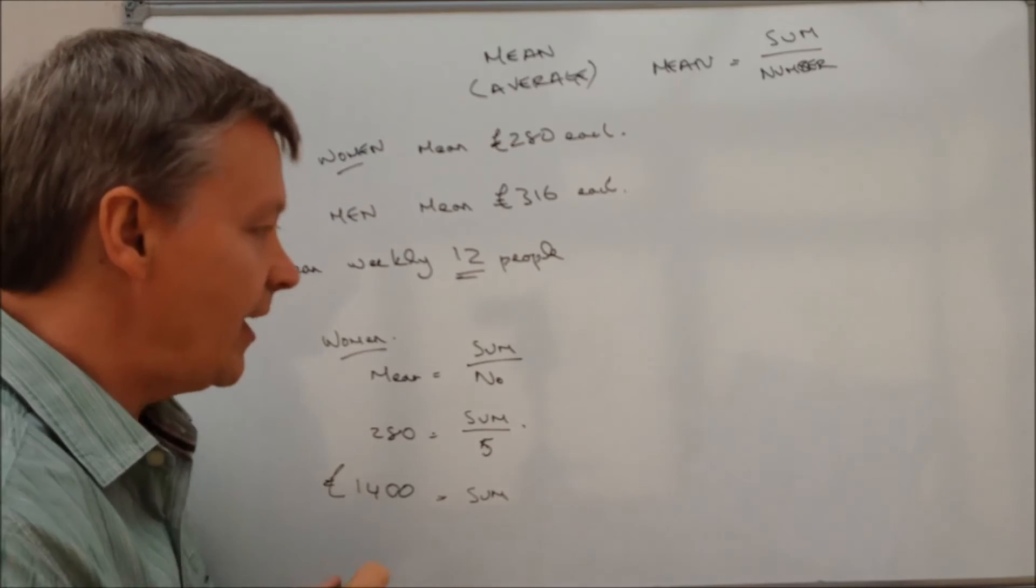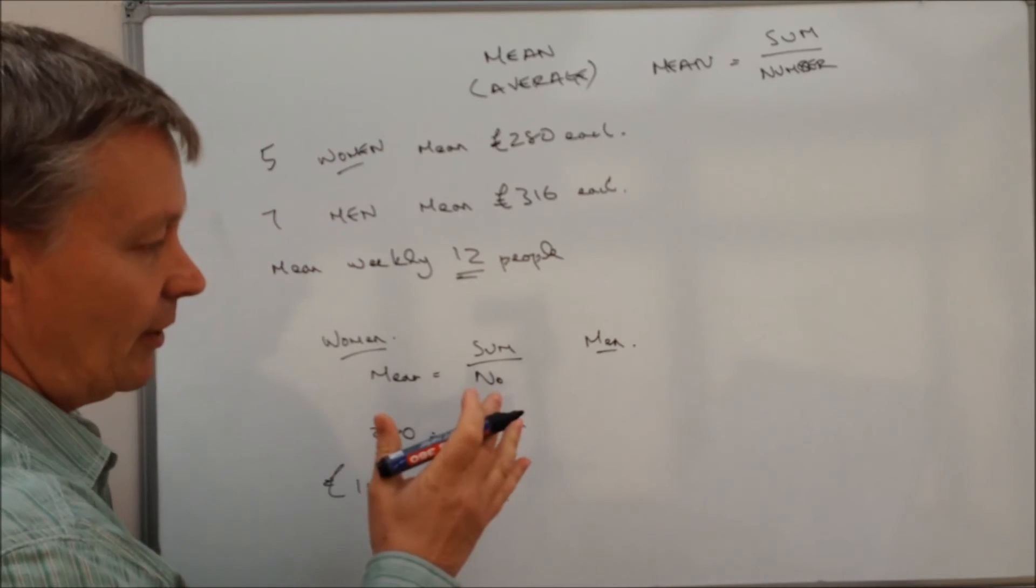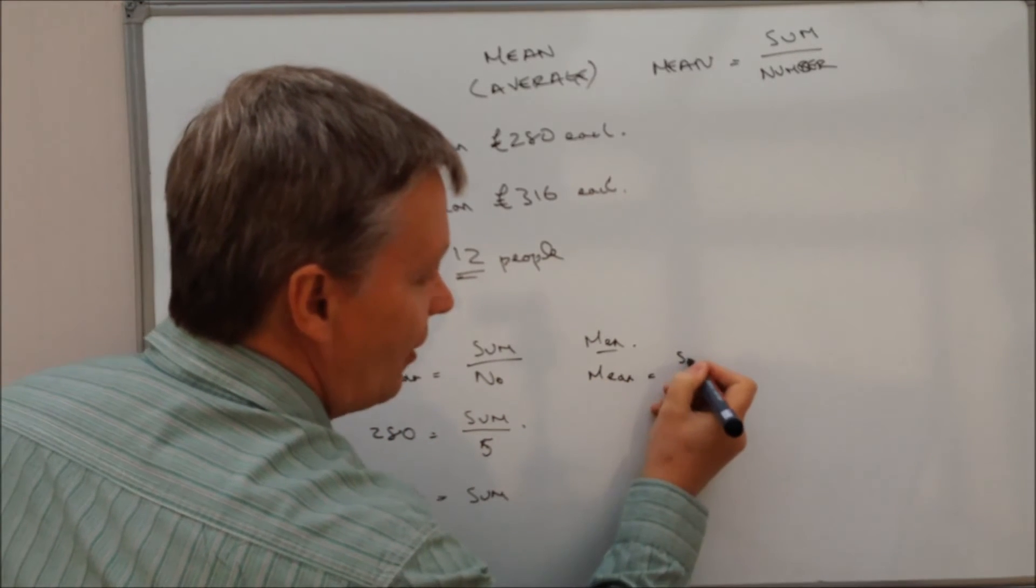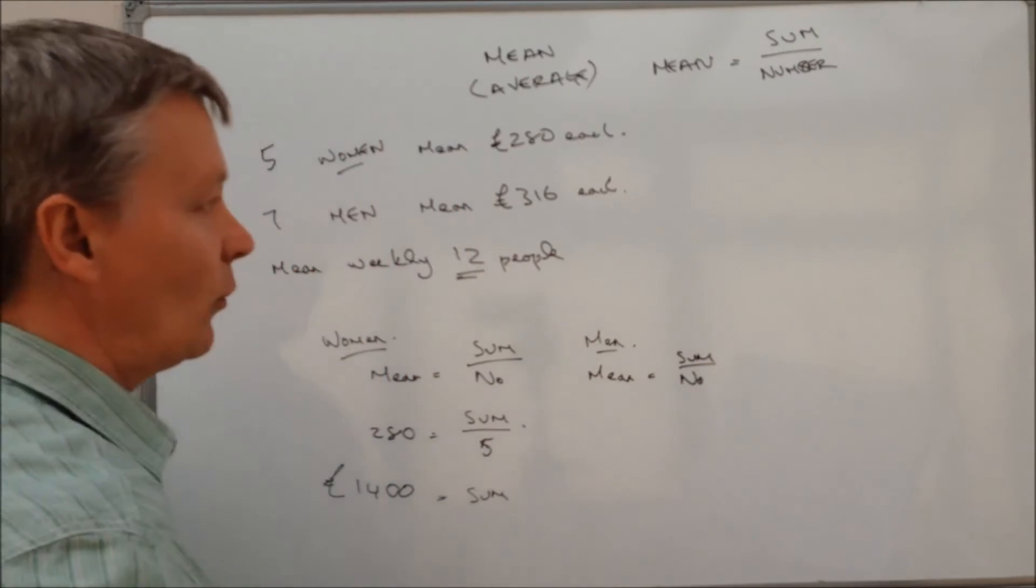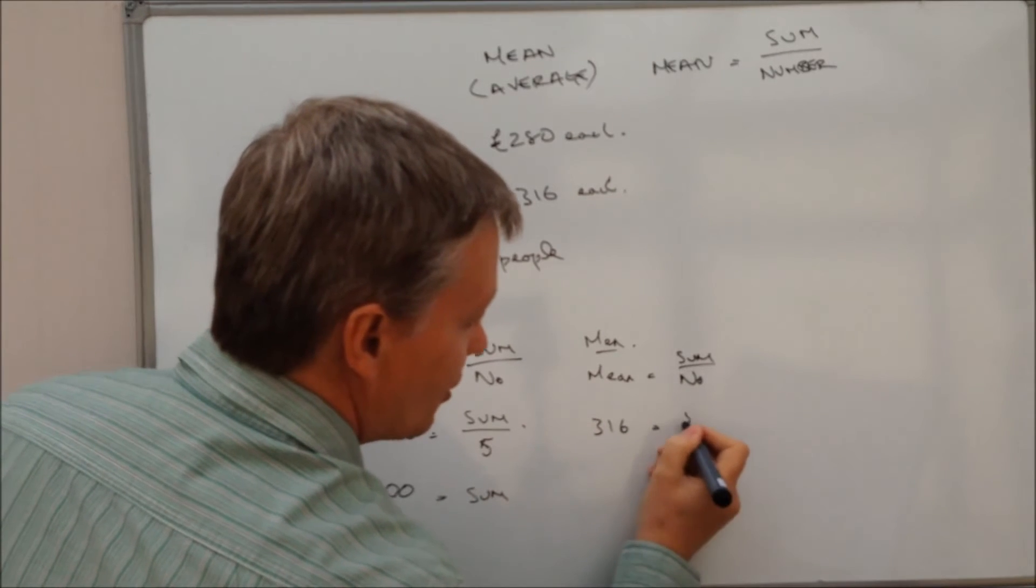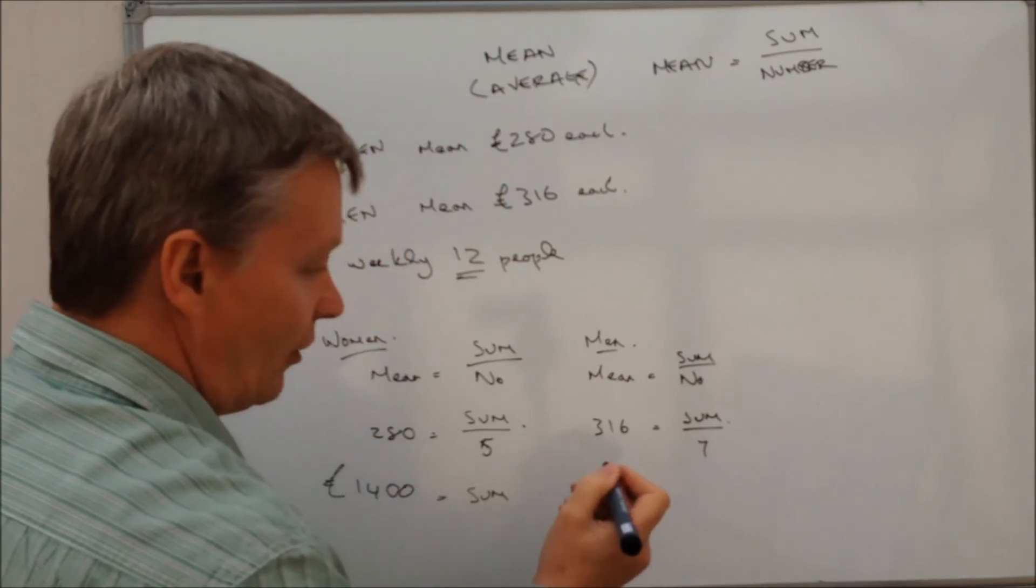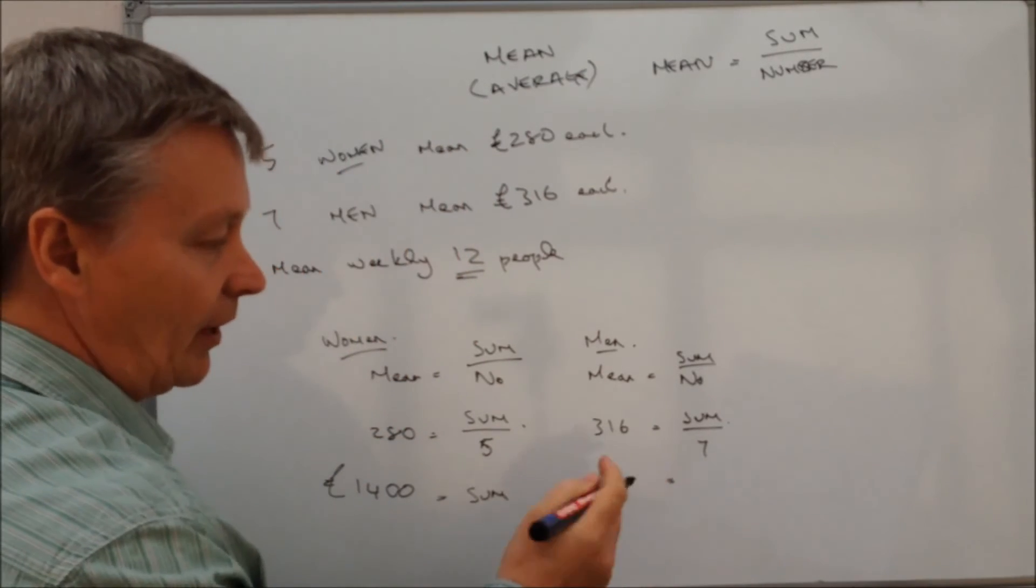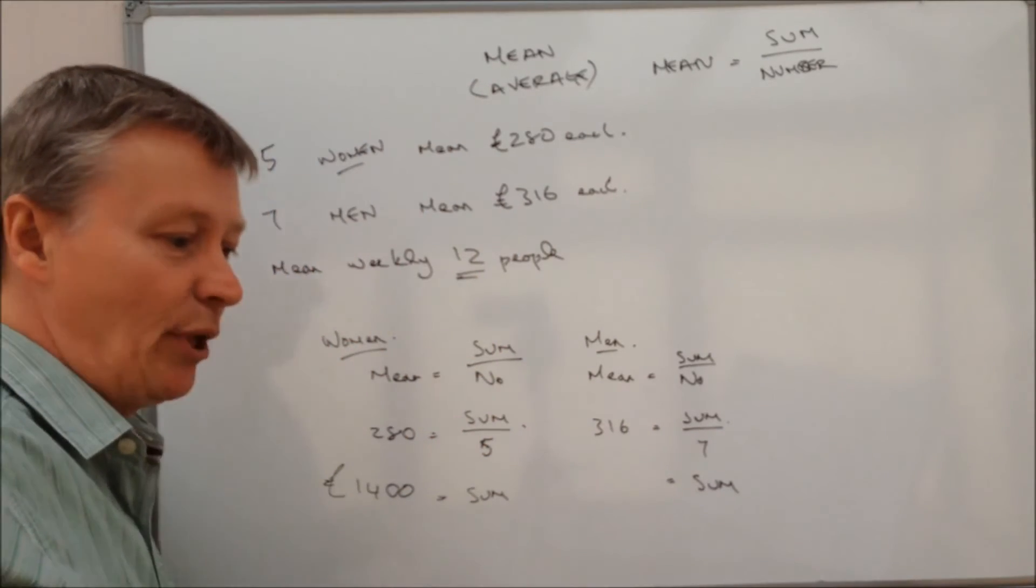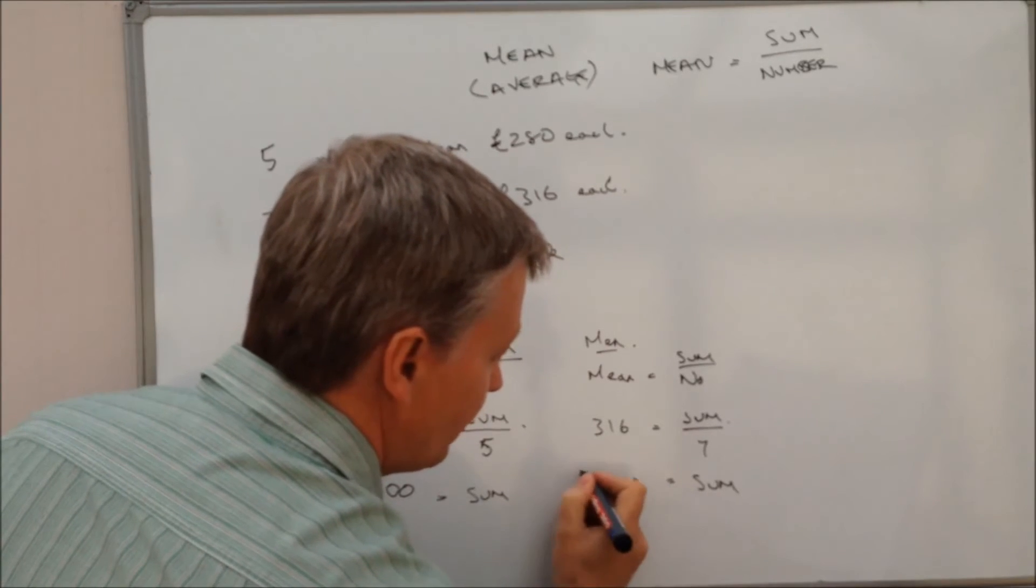I'm going to do the same also with the men. So with the men, we've got the same idea. We've got the mean equals the sum over the number. Well, the information we're given is the mean is 316. The sum we don't know, but we do know that there are seven men. So 316 times seven means that the bill for the men altogether is going to be 2212.